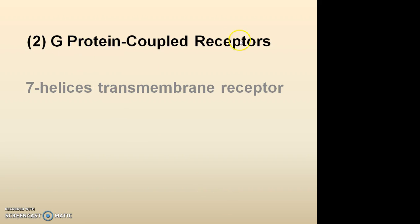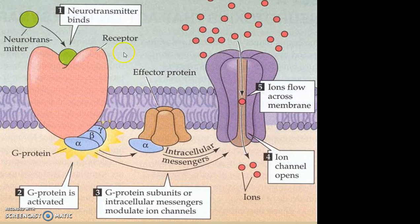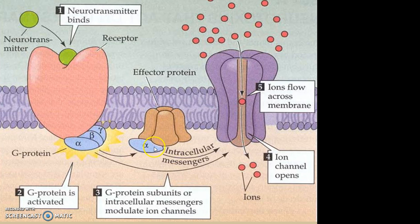The second type is the G protein coupled receptor, which is a 7-helical transmembrane receptor. This receptor has three subunits: alpha, beta, and gamma. After binding of a neurotransmitter, the alpha subunit separates from the beta and gamma subunits, and this separation activates the receptor. The activated receptor then activates the secondary messenger system, which includes PIP2, IP3, DAG, and ion channels. This secondary messenger will either further activate a tertiary messenger or directly show a pharmacological effect.